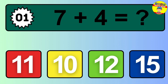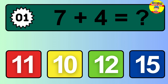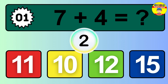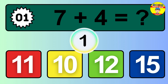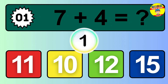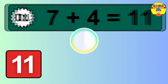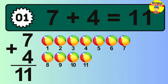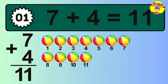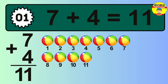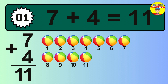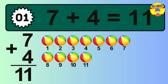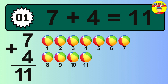Question 1. 7 plus 4 equals what? So the answer is 7 plus 4 is 11. Let's count it: 1, 2, 3, 4, 5, 6, 7, 8, 9, 10, 11.